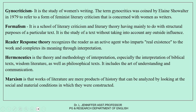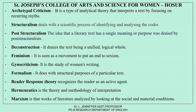We will now see important theories of literary criticism. Archetypal criticism is a type of analytical theory that interprets a text by focusing on recurring myths or archetypes — the word 'arche' is from the Greek meaning 'beginning,' and 'typos' means imprint. These recurring patterns can be symbols, images, or character types. Structuralism deals with the scientific process of identifying and analyzing codes, forms, signs, systems, and symbols embedded in social and cultural practices. Post-structuralism argues that literary texts do not have a single meaning; rather, every individual creates their own meaning, so a text has multiple meanings.